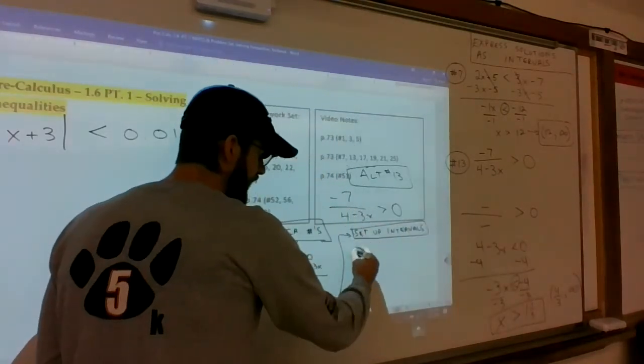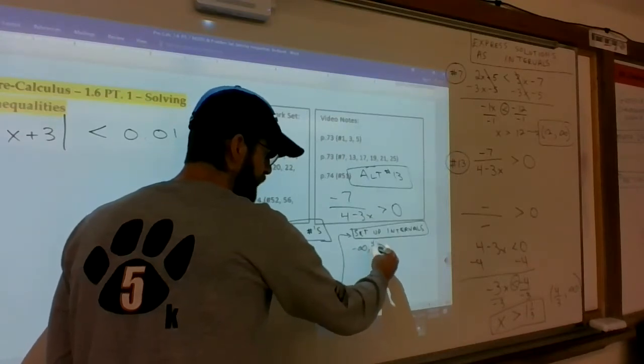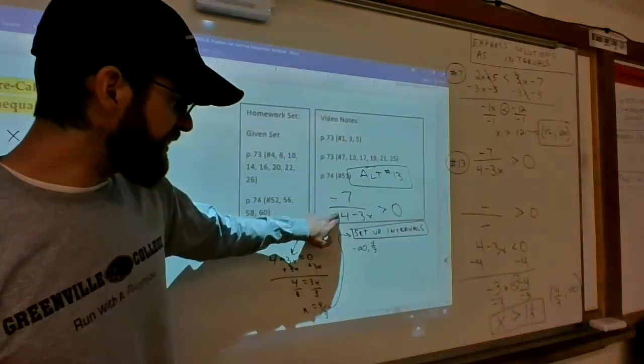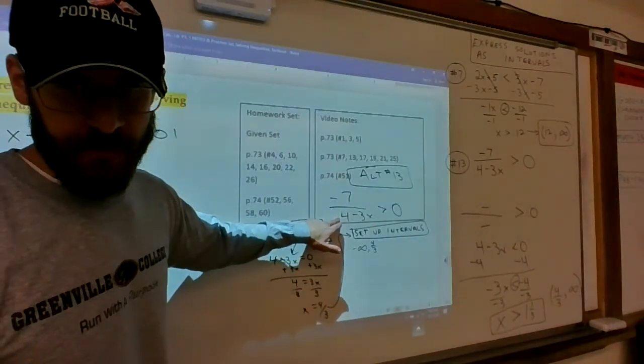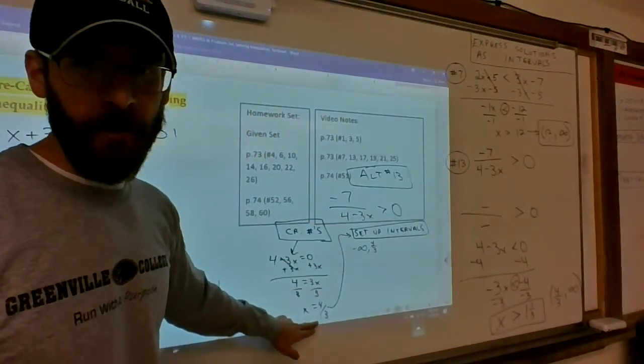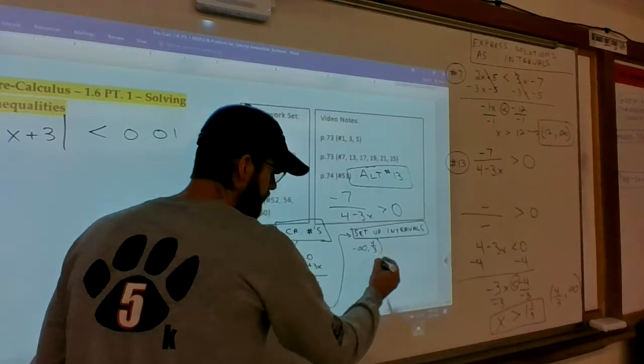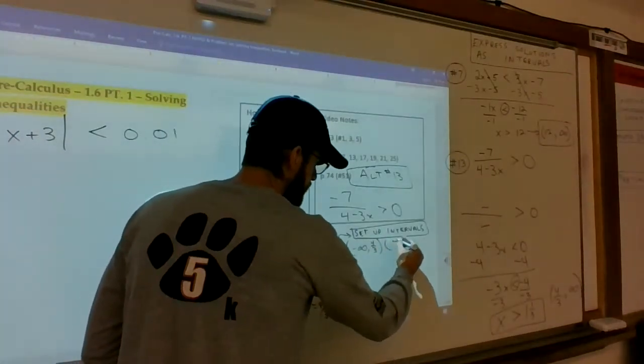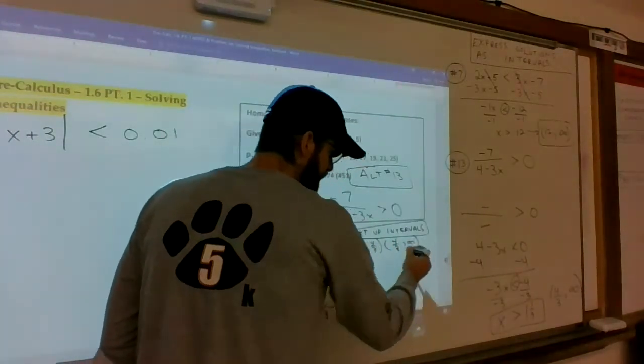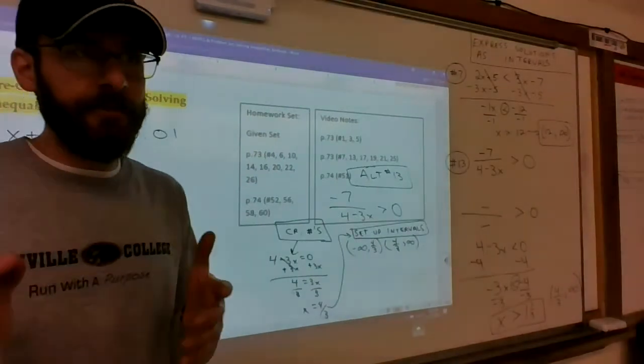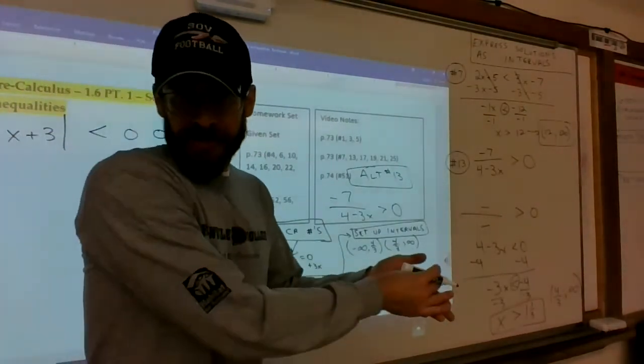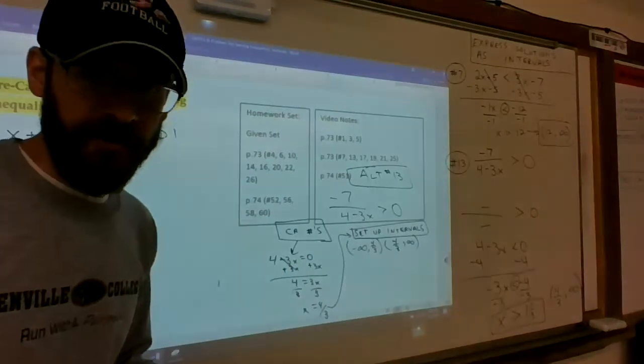Start at negative infinity, stop at 4/3. Because it's in the denominator, you can't divide by zero, so it has to be a parenthesis. Then you go from 4/3 to infinity. It's either negative infinity to 4/3 or 4/3 to infinity. It's one or the other.